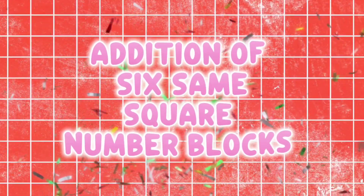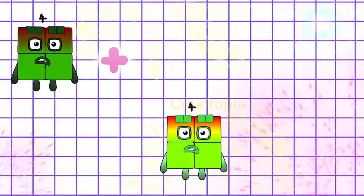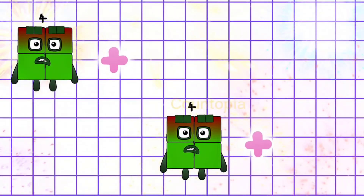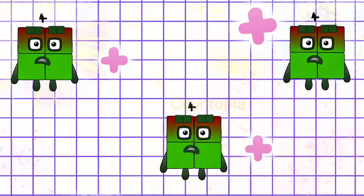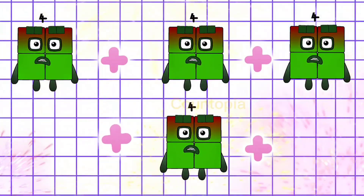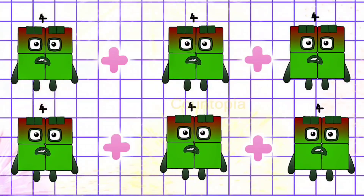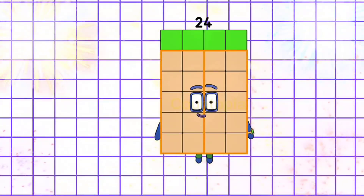Addition of 6 same square number blocks. Let's go. 4 plus 4 plus 4 plus 4 plus 4 plus 4 is equals to 24.